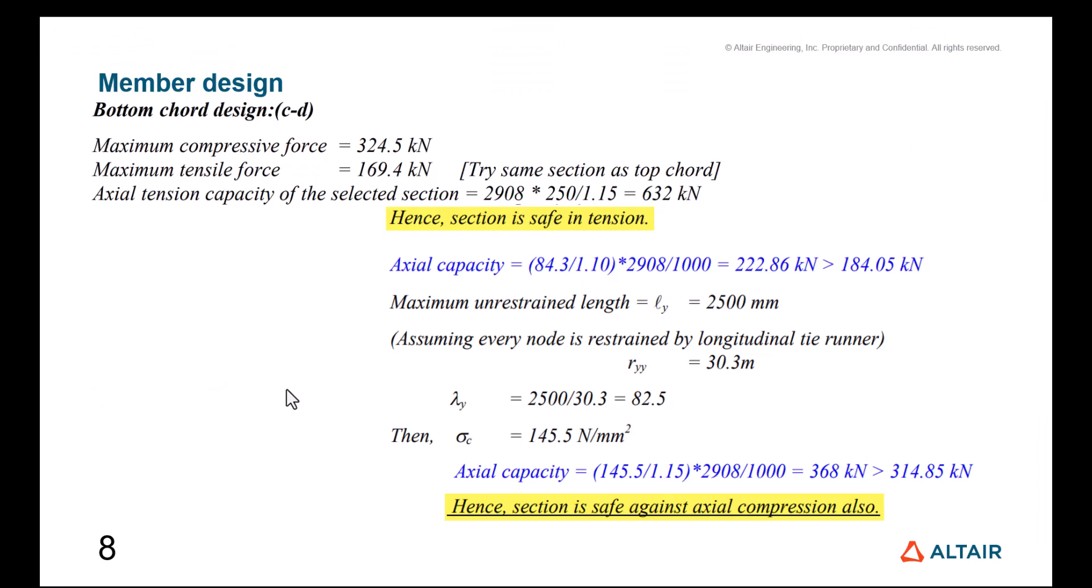Next, we are going to take one of the bottom chord members and do the same. Here we have a maximum compressive force of 324.5 kilonewtons and a maximum tensile force of 169.4 kilonewtons. We're going to try the same section as the top chord.